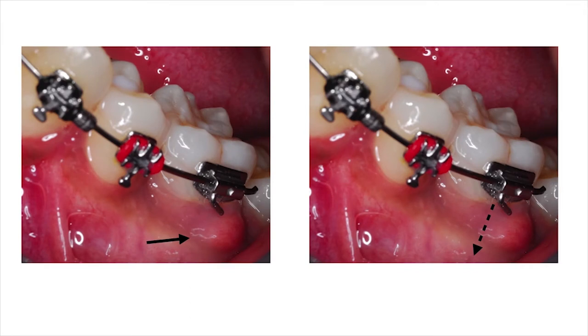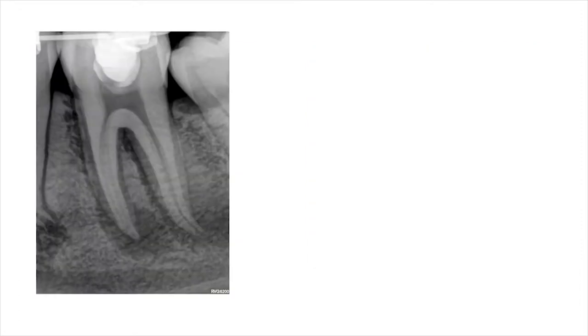The patient, a 16-year-old male, presented with a non-vital mandibular left first molar during orthodontic treatment due to a leaking occlusal restoration. The buccal gingiva was swollen and he presented with a periodontal pocket of about 11 mm in this area, as indicated by the arrows on the slide. A preoperative periapical radiograph revealed a large periapical area and it was decided to take a CBCT scan to determine the extent of the pathology and the prognosis of this tooth.